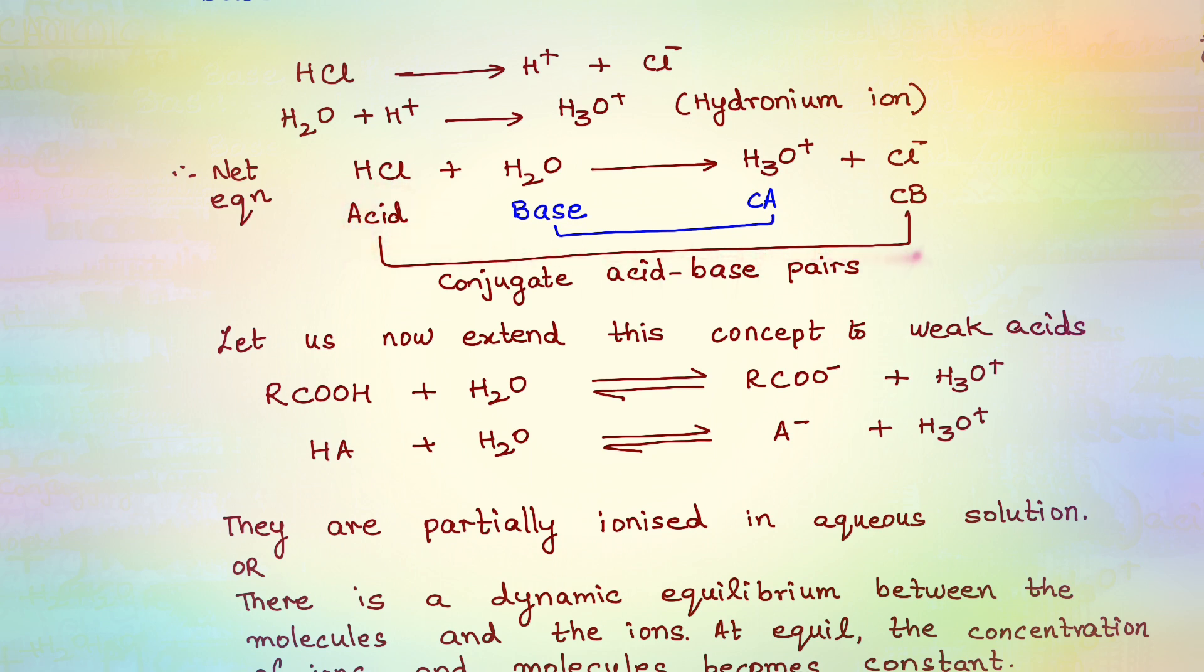In turn it forms something which is happy to take a proton. So my Cl- is a base. The combination of HCl and Cl- are mutual acids and bases, that is why Cl- is known as the conjugate base of HCl. In short we denote it as CB. So HCl and Cl- are conjugate acid-base pairs. How do you determine the conjugate acid-base pair? Simply add H+ or remove H+.